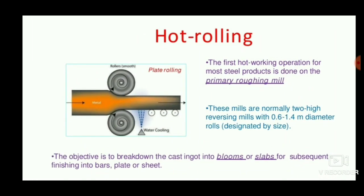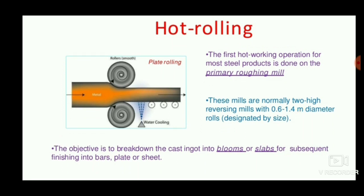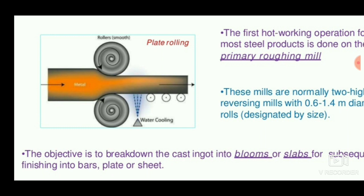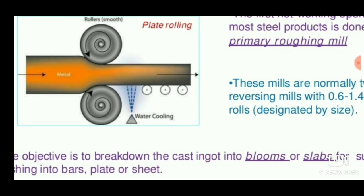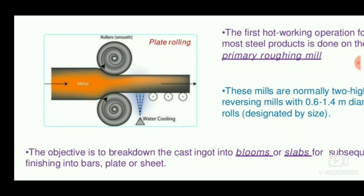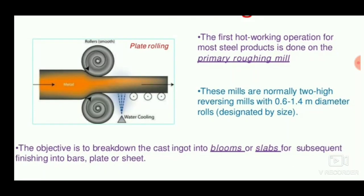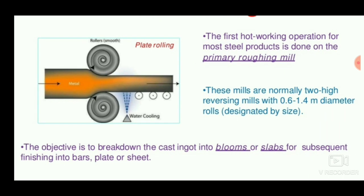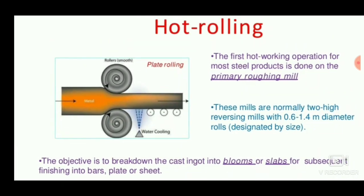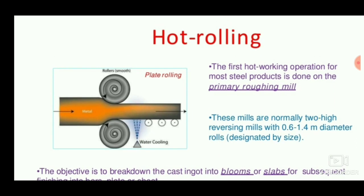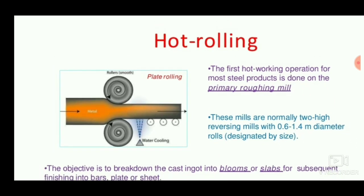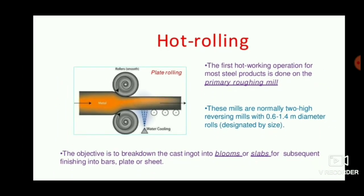The first hot rolling operation for most steel products is done on the roughing mill. A cast ingot is placed between two rollers and water cooling is applied to harden the outer surface. These mills are normally two high reversing mills with 0.6 to 1.4 meter diameter rolls. The main objective of hot rolling is to convert the cast ingot into blooms or slabs.